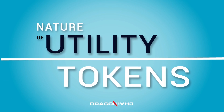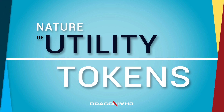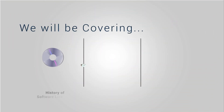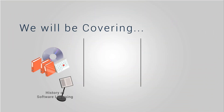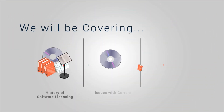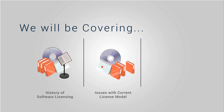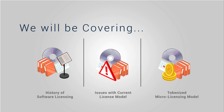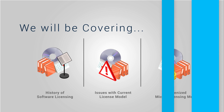Welcome back to the third video in our series where we answer questions about the nature of utility tokens. In this video, we will be covering the history of software licensing, issues with current license models, and our definition of our new tokenized micro license model.